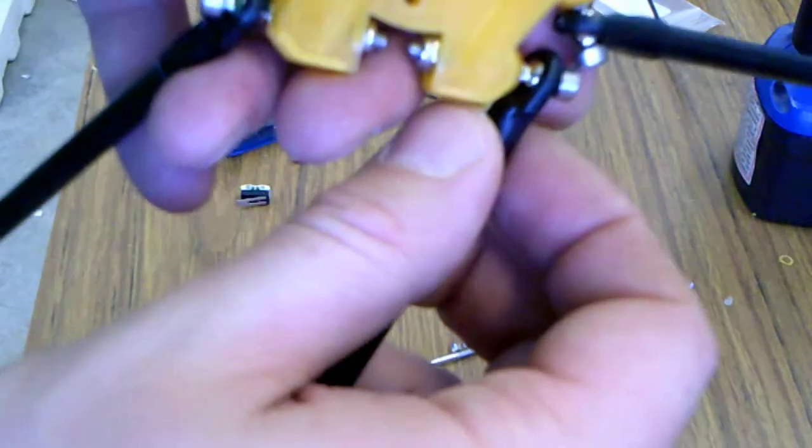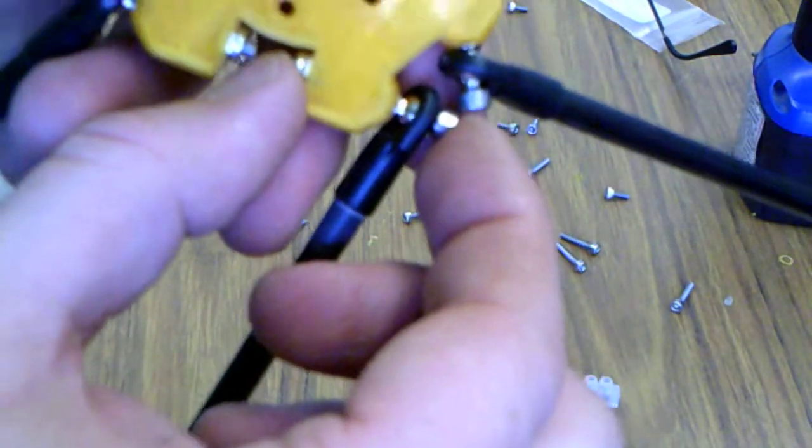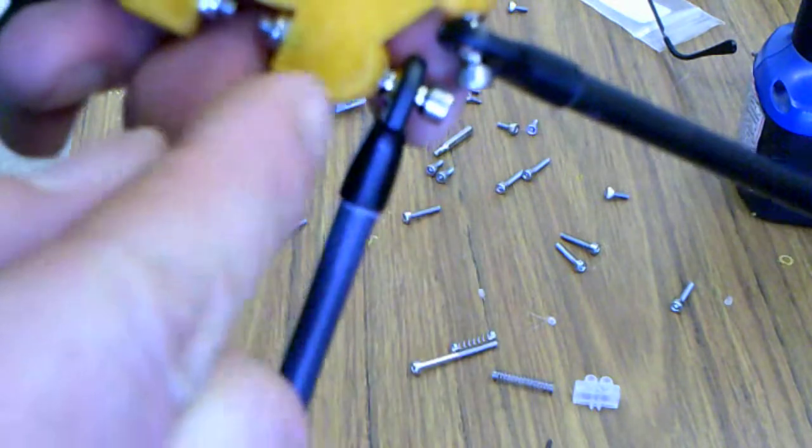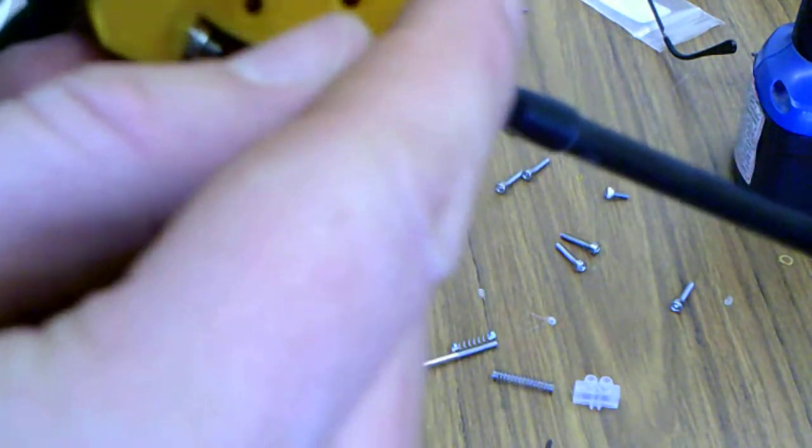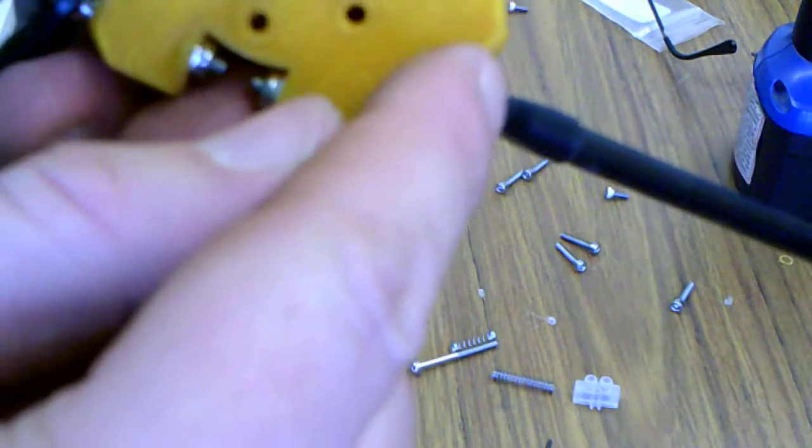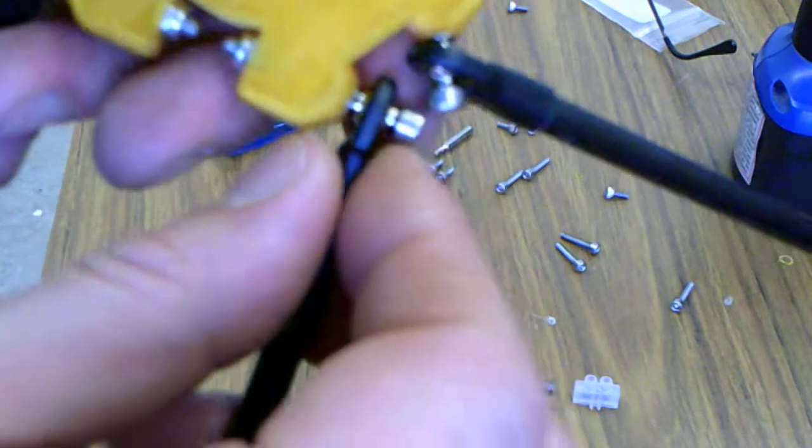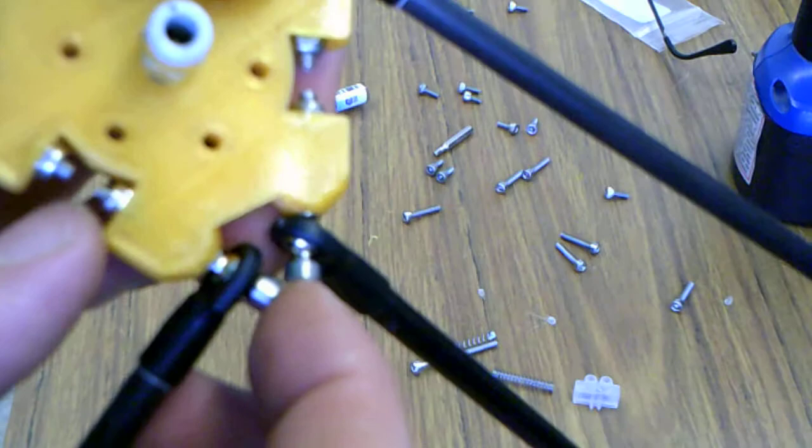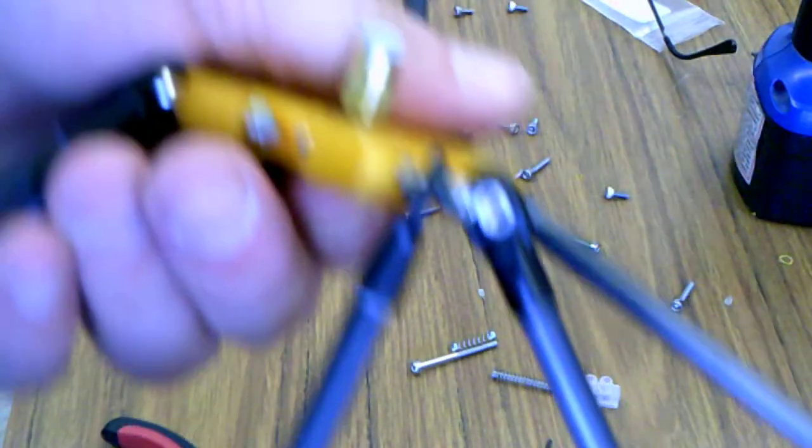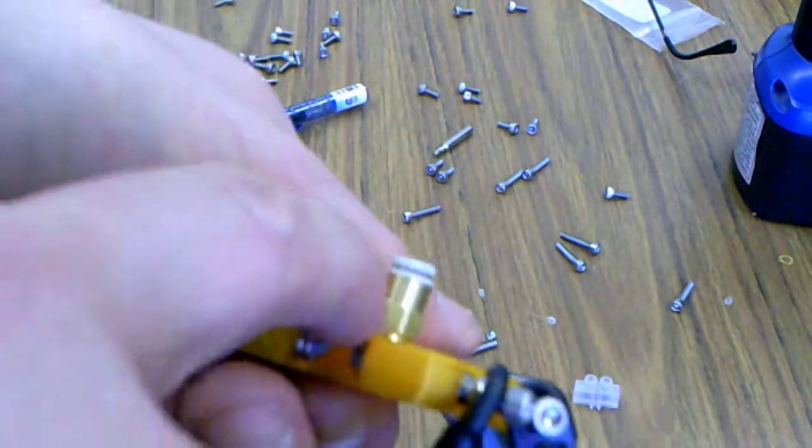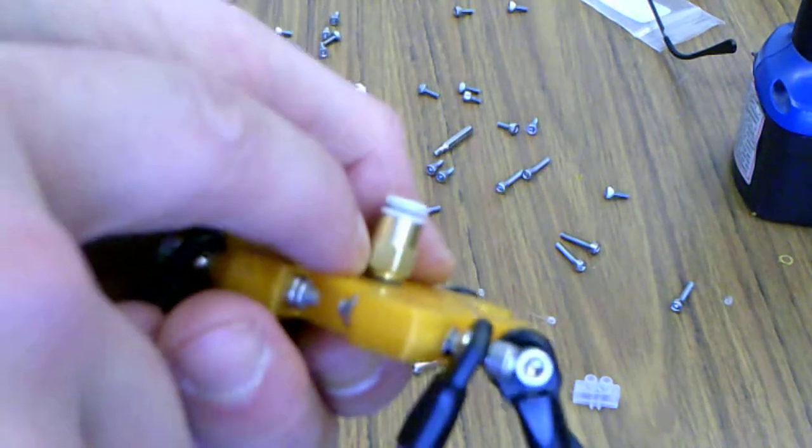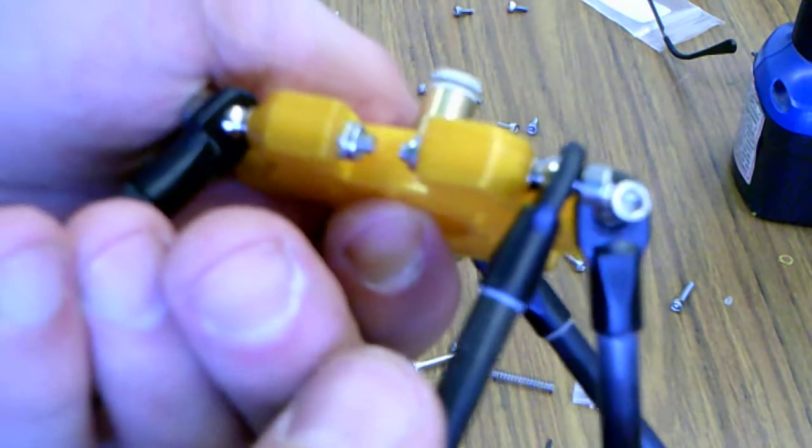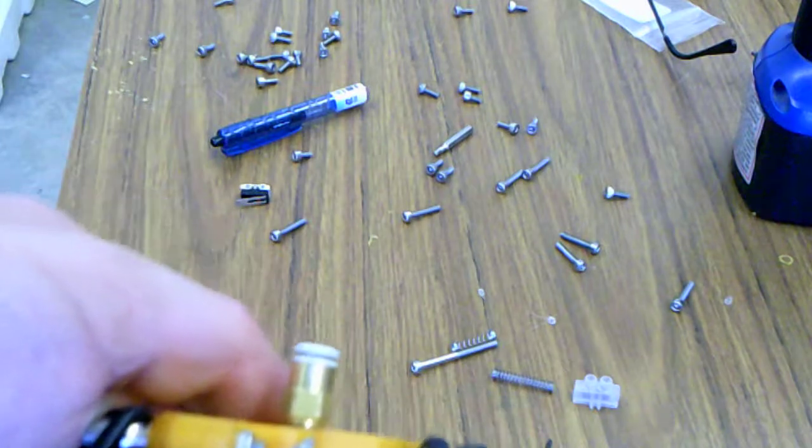One thing to keep in mind is you want to tighten these down pretty decent. You don't want any play in this universal ball, this little ball joint that you have here. Make sure it's snugged up tight. You also want to make sure that your Bowden hardware is flush and as straight as possible vertically.